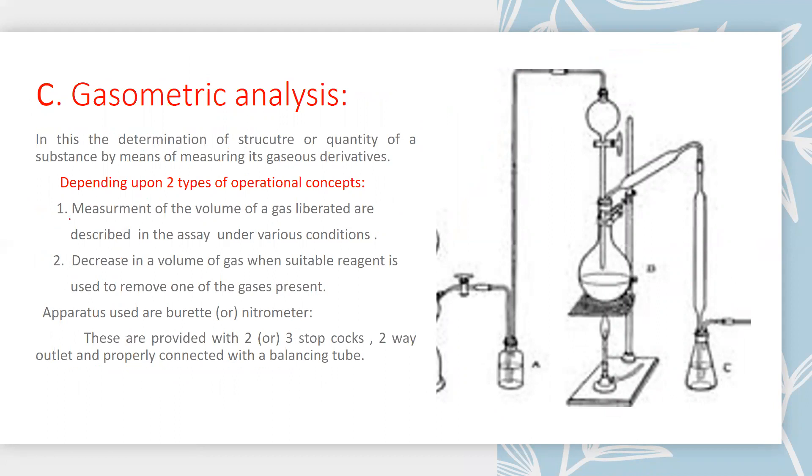First, measurement of the volume of a gas liberated or absorbed in the assay under various conditions. Second, decrease in volume of gas when a suitable reagent is used to remove one of the gases present. The apparatus used are burette or nitrometer, which are provided with two or three stop cocks, a two-way outlet, and properly connected with a balancing tube.